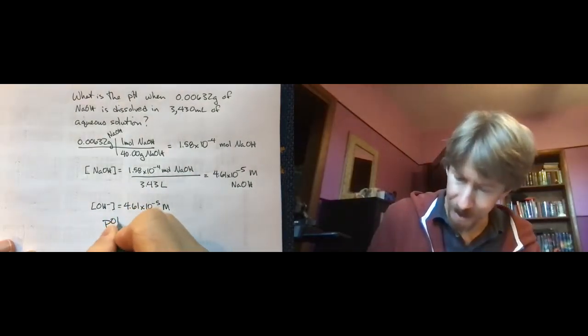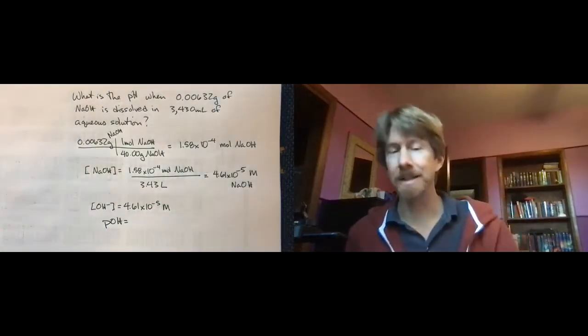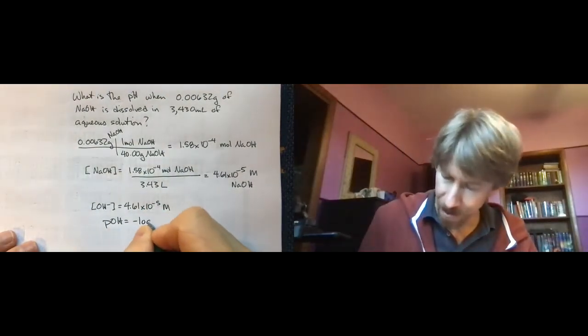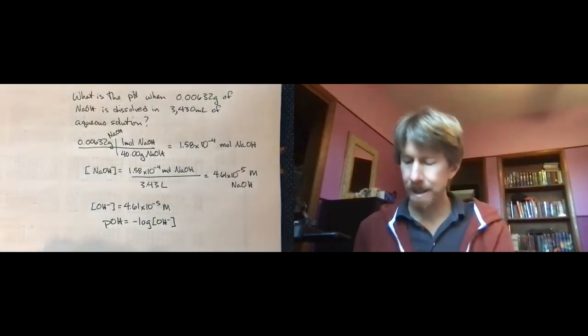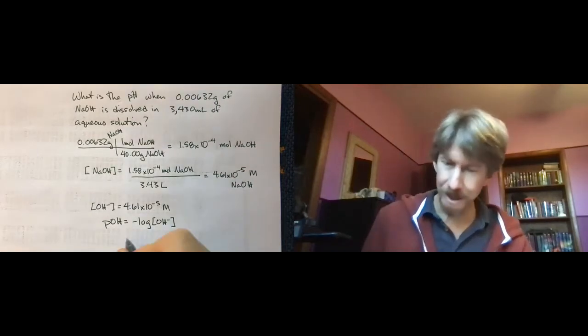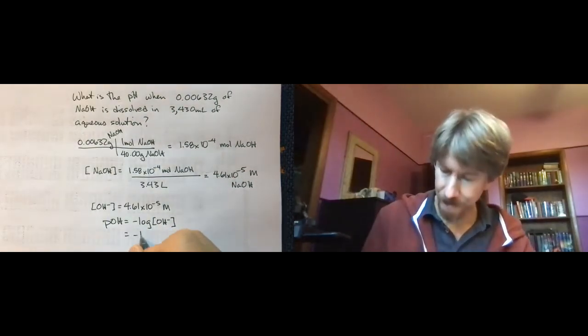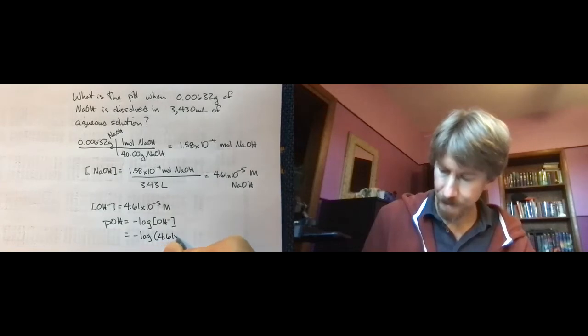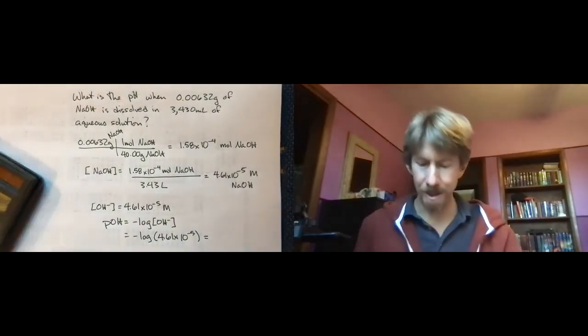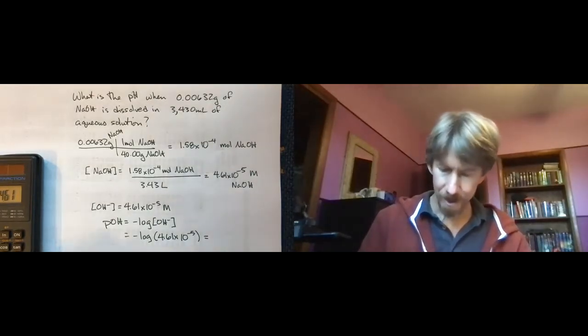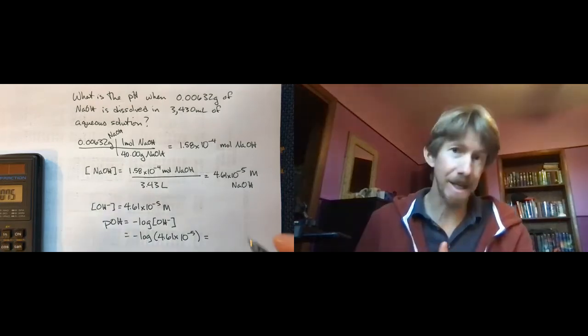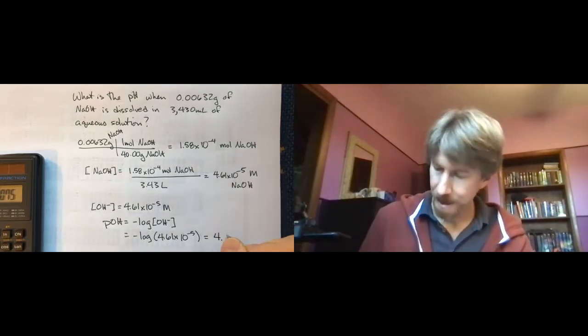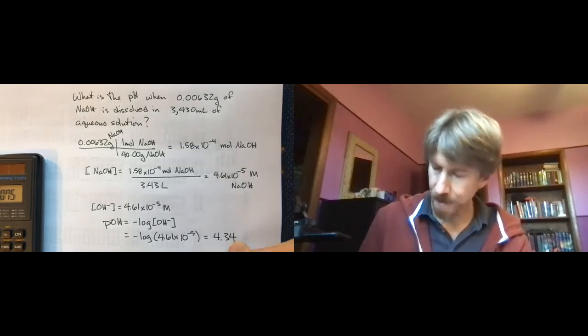And it means that we have to find the pOH, at least this is how I usually do it, before I can find the pH. So I'm going to plug in my concentration here. Now, when I do that, I get 4.61 exponent 5 minus log button on my calculator. That's why I have to hit the log button afterwards. It is 4.34.